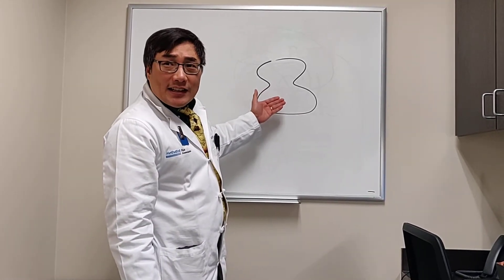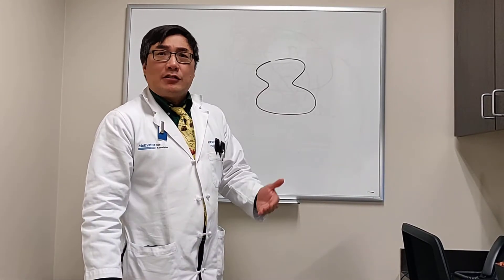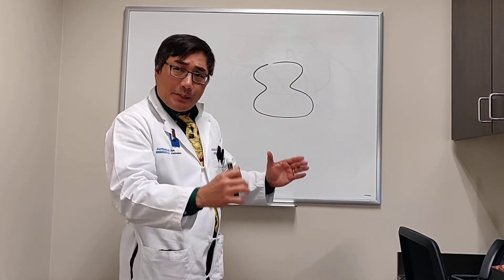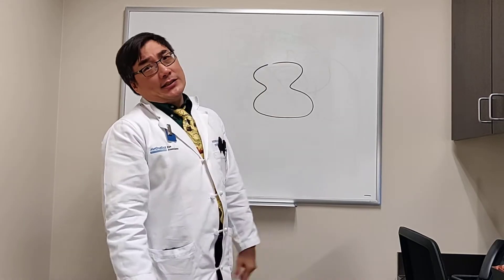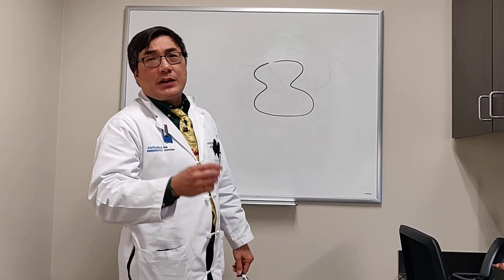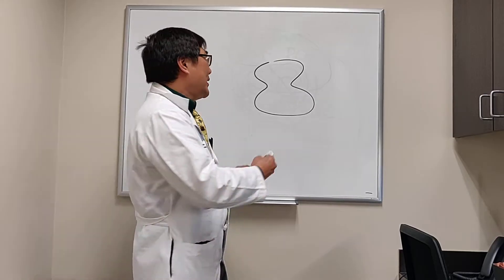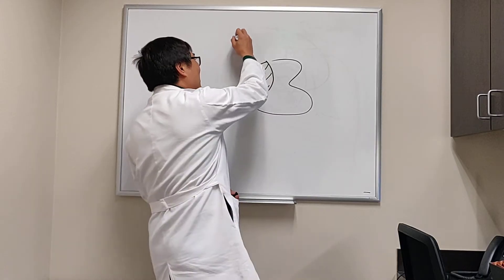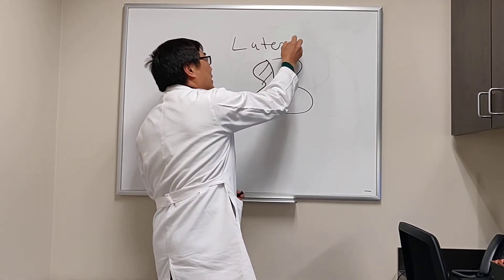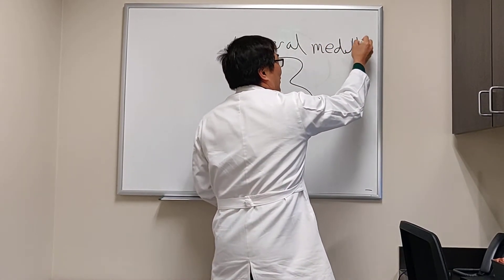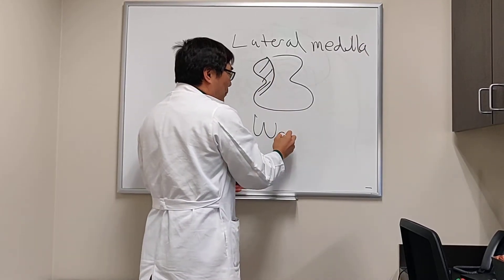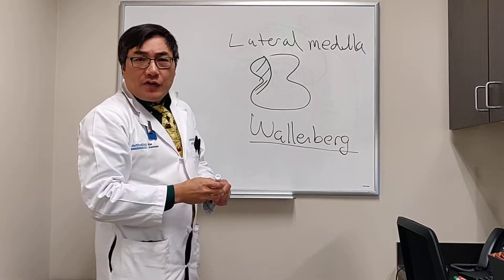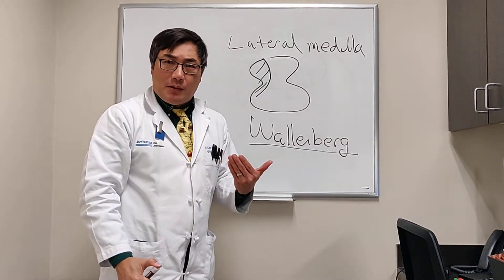This little violin-looking thing is the medulla. It looks different than the midbrain, which has those Mickey Mouse ears, and the pons, which looks like an apple. The only reason an ophthalmologist would ever go to the medulla is because sometimes there's an infarct in the lateral portion of the medulla, which we call the lateral medullary syndrome, also known as the Wallenberg syndrome — something an ophthalmologist needs to know because a number of findings show up to ophthalmology.